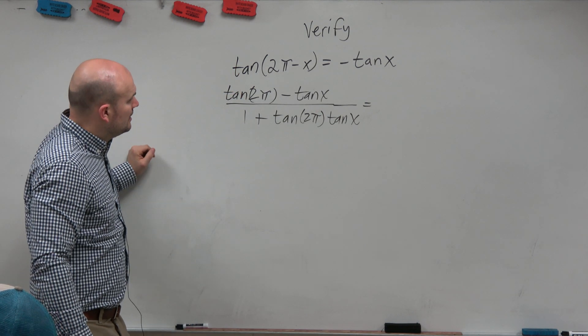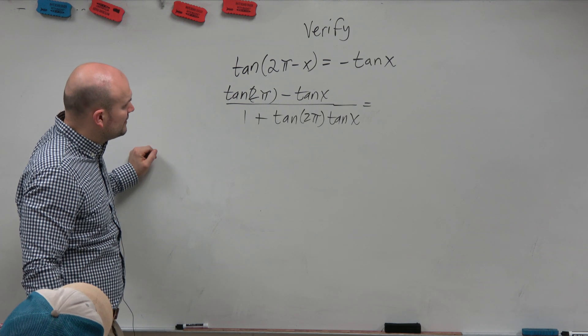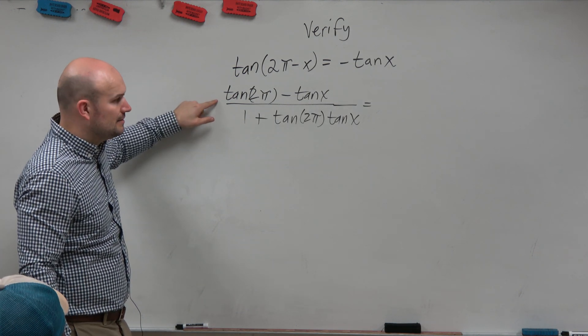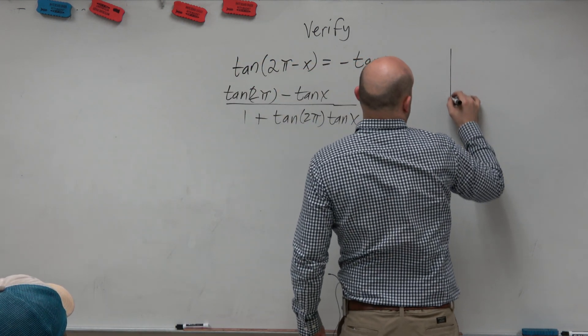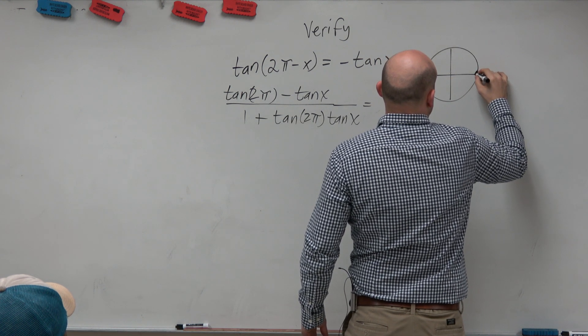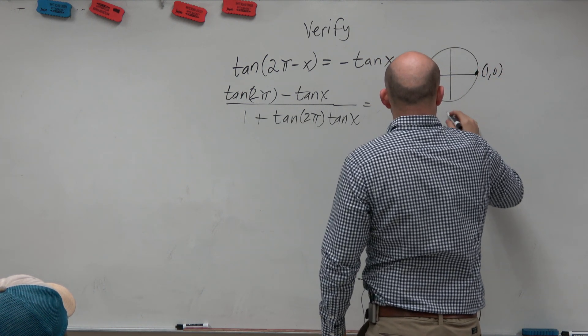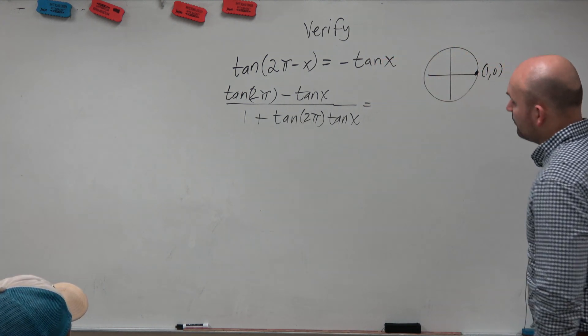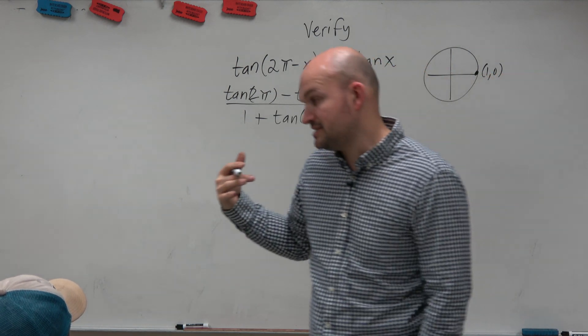Now when we go and look at this, now we think about 2π. Where's 2π again? 2π over here. That's the coordinate point 1 comma 0. So remember, tangent is the y-coordinate over the x-coordinate. So that is 0.